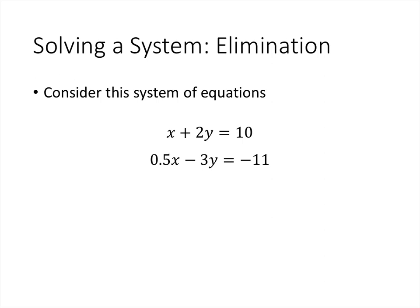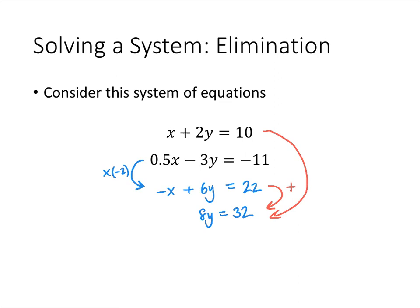Our goal is to get a single variable by itself equaling a number. One way to do this is to take the second equation and multiply it by negative 2. When we multiply both sides by negative 2, we get minus x plus 6y equals positive 22. Then we take the first equation together with this new equation and add them together — adding both the left-hand sides and the right-hand sides. The x and the minus x cancel out, and we get 8y equals 32. Dividing both sides by 8 gives y equals 4.